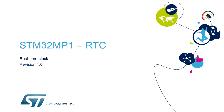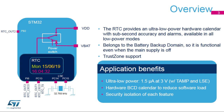Hello, and welcome to this presentation of the STM32 real-time clock. It covers the main features of this peripheral, which is used to provide a very accurate time base. The RTC peripheral features an ultra-low-power calendar with sub-second accuracy and alarms, which run in all low-power modes.